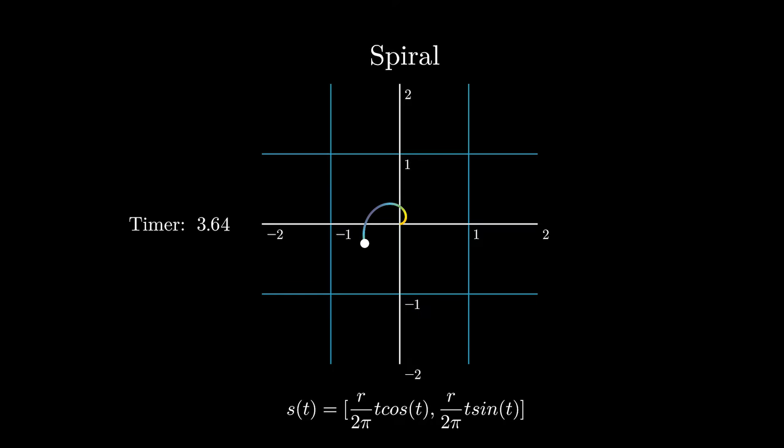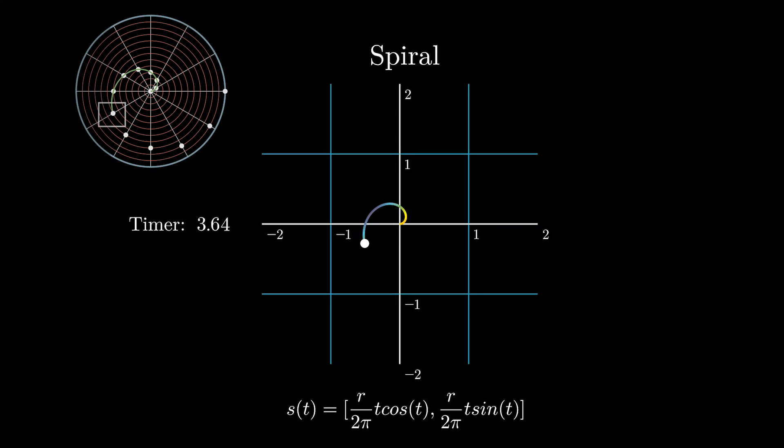If we pause at this point here, this is seven pi on six. And if you remember, that's the exact coordinate, seven pi on six, around the circle.